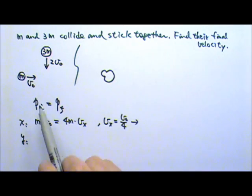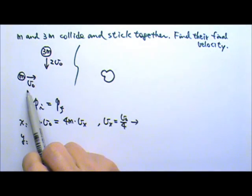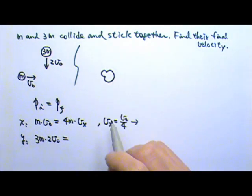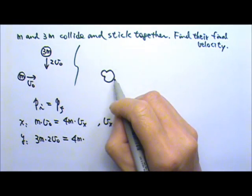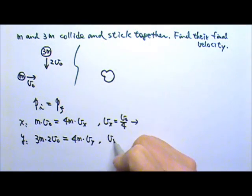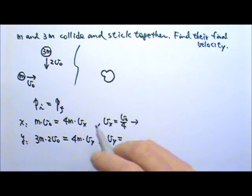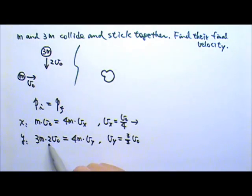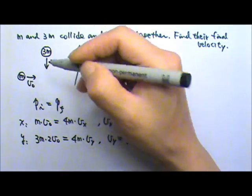In the y-direction, before the collision, 1M does not have any momentum in the y-direction, but the 3M does. So the initial momentum is 3M times 2VO. After the collision, there will be 4M moving together, and its final velocity y-component is Vy. Again, amps cancel and we'll be able to find the y-component. Divided by 4 on both sides, we'll get 3 halves VO. Positive, so it should be in the same direction as this positive 2VO, which means it is southward.